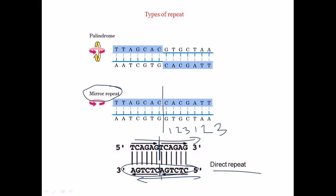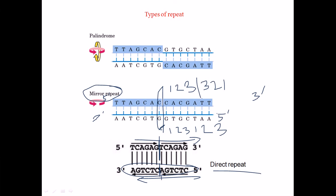We have to maintain the 5 prime to 3 prime direction properly — here is the 5 prime and here is the 3 prime. This is called a mirror repeat because we can consider a mirror in this plane, and after putting this mirror we find this sequence in the mirror. So if we have one-two-three, the sequence will be three-two-one right after — that is called the mirror sequence.